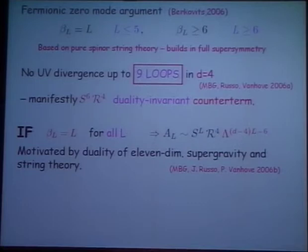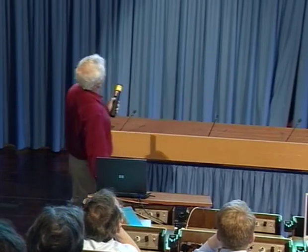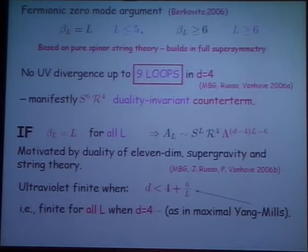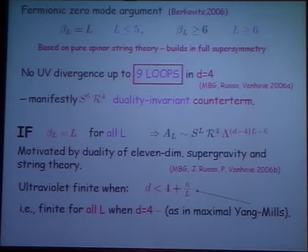If that's true, then at any loop the divergence has this power of lambda. And then the condition that the divergence should not be there is the condition that the dimension D should be less than 4 plus 6 over L. This coincides precisely with the condition in maximal super-Yang-Mills. In fact, the examples given by Lance Dixon earlier are examples of this agreement at low numbers of loops with their specific calculations. So I don't want to claim this as a proof — I'd be in trouble if I did — but it's all slightly surreal.